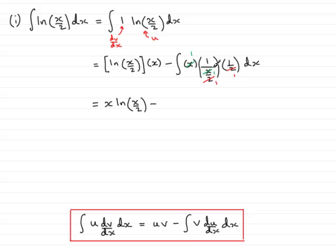Minus, and as I said earlier, this cleans up to just be simply 1. So this is minus the integral of 1 with respect to x. We can now integrate that 1 with respect to x, which is simply x. And don't forget the constant of integration, plus c.